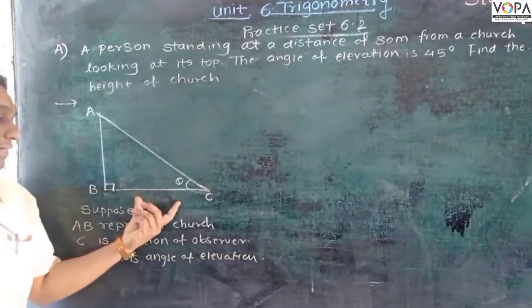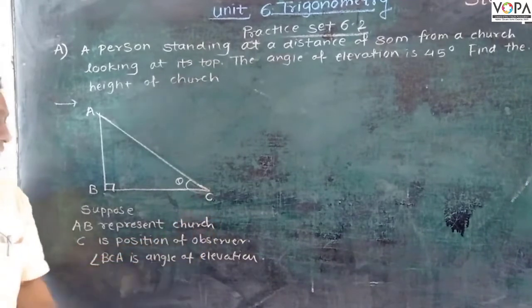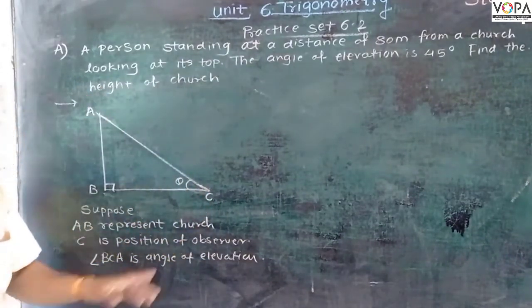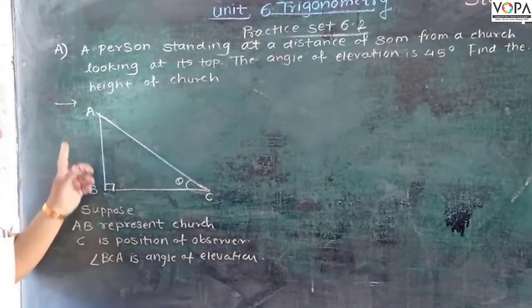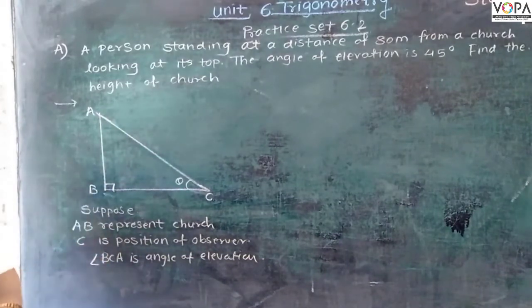BC is the distance between observer and church. C is the observer position. This observer will look at the top of the church. Theta is the angle of elevation - angle BCA is the angle of elevation.